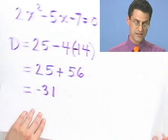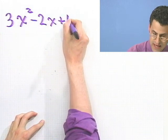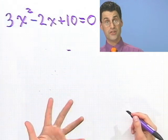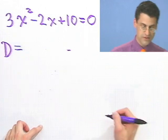Let's try another one really fast. How about this one? 3x² - 2x + 10 = 0. All I want to know is what kind of solutions are there going to be? So let's compute the discriminant.